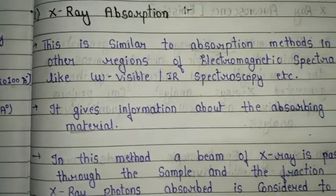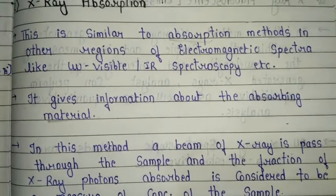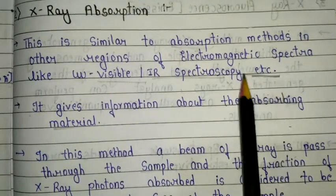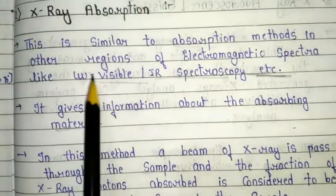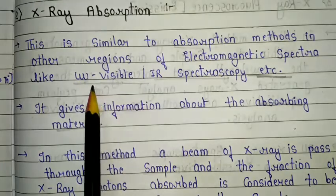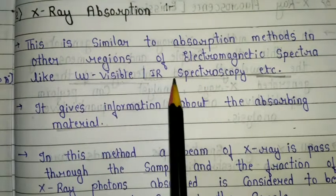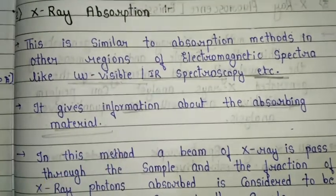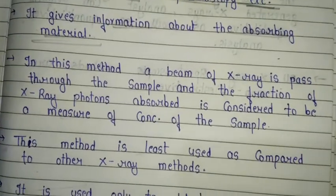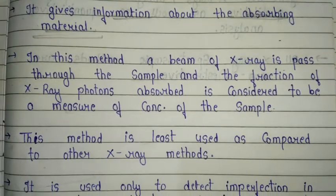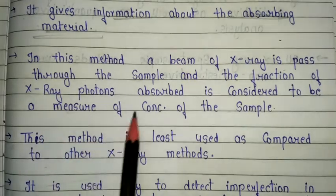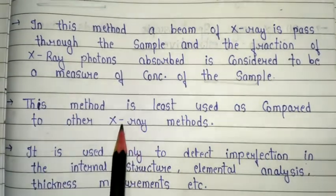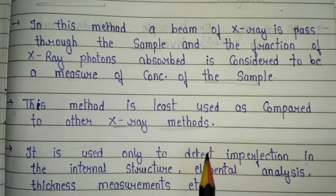The second type is X-ray absorption. This is similar to the absorption method in other regions of the electromagnetic spectra, like ultraviolet-visible and IR spectroscopy. It gives information about the absorbing material. In this method, a beam of X-rays is passed through the sample and the fraction of X-ray photons absorbed is considered a measure of concentration of the sample.